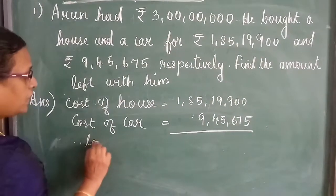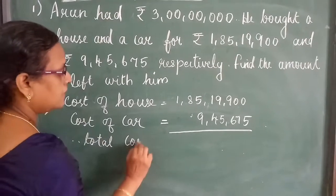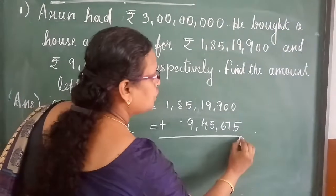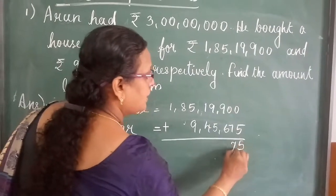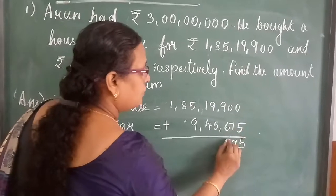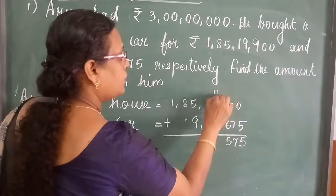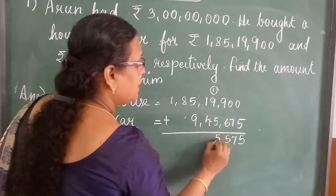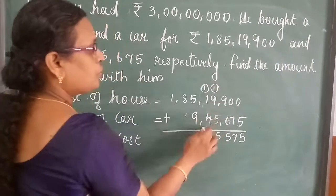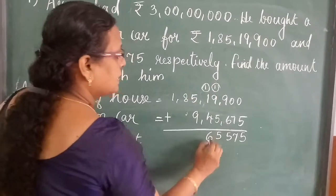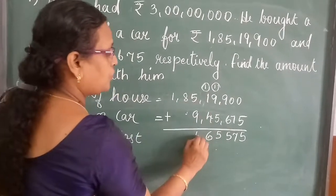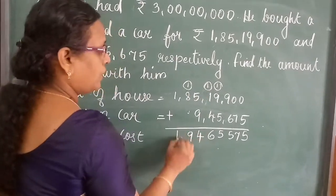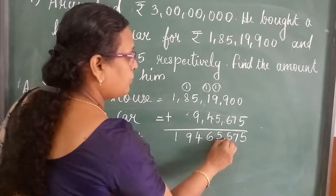Cost of house = Rs. 1,85,90,900. Cost of car = Rs. 9,45,675. Therefore, total cost = add these two. Adding: 5+0=5; 7+0=7; 6+9=15, write 5 carry 1; 9+5+1=15, write 5 carry 1; 4+1+1=6; 5+1=6; 9+5=14, write 4 carry 1; 8+1+1=10; giving total = Rs. 1,94,65,575.